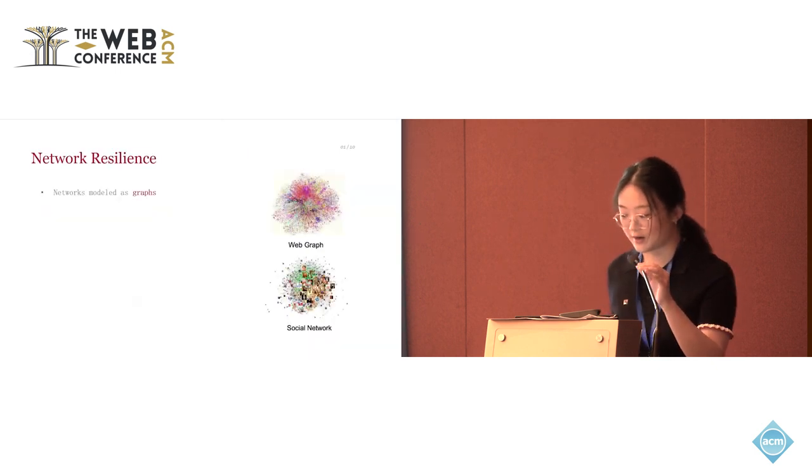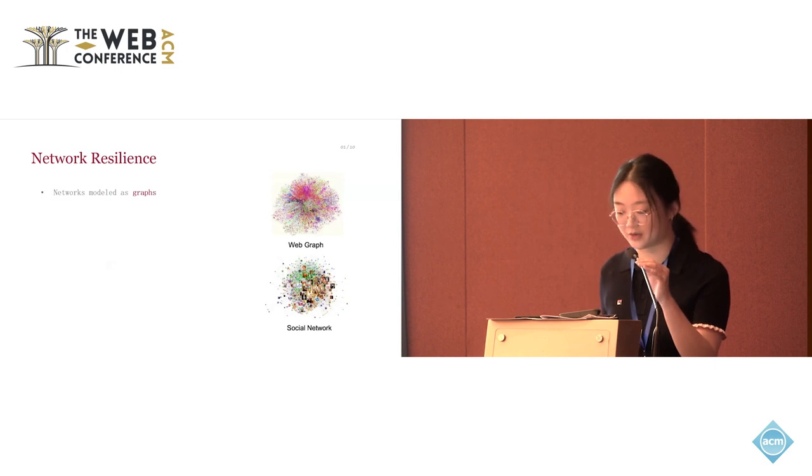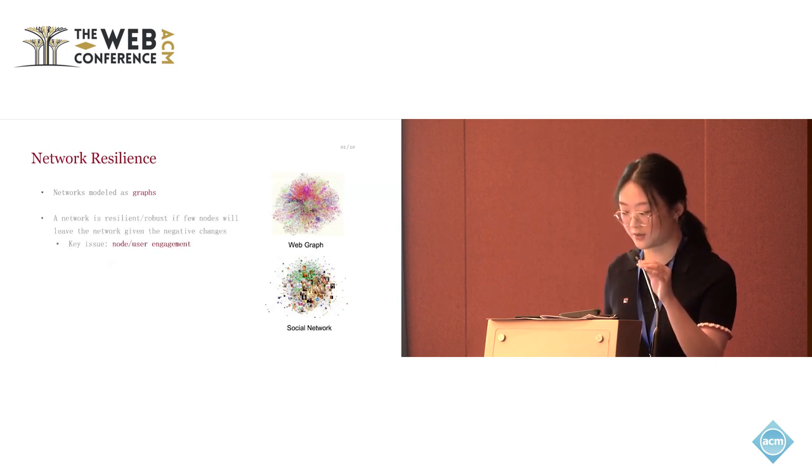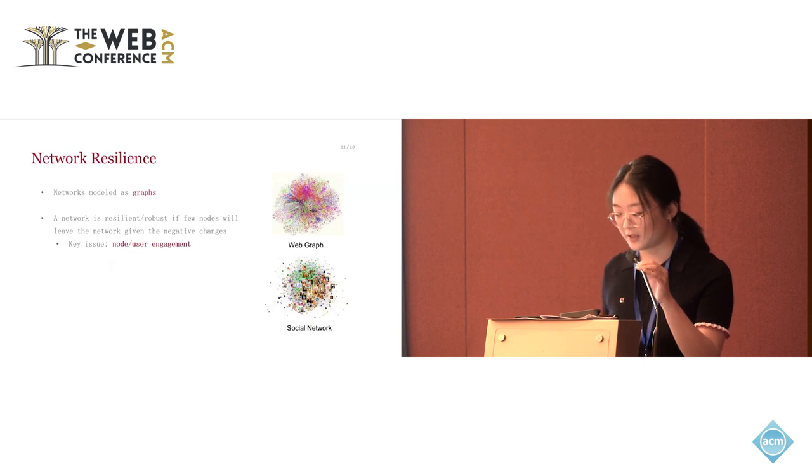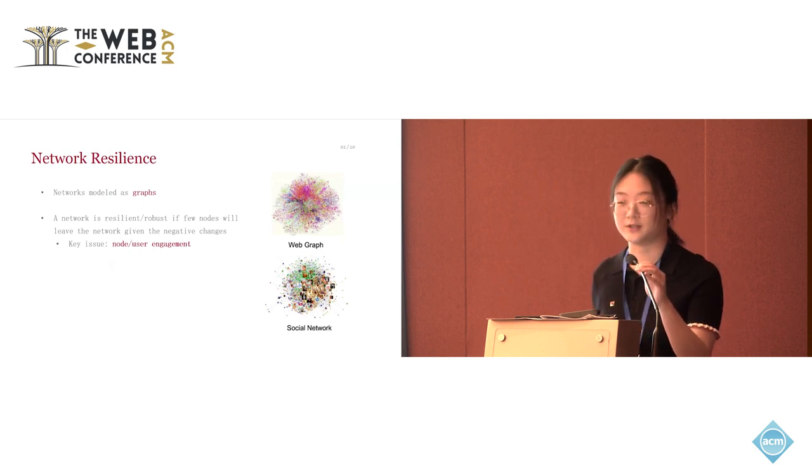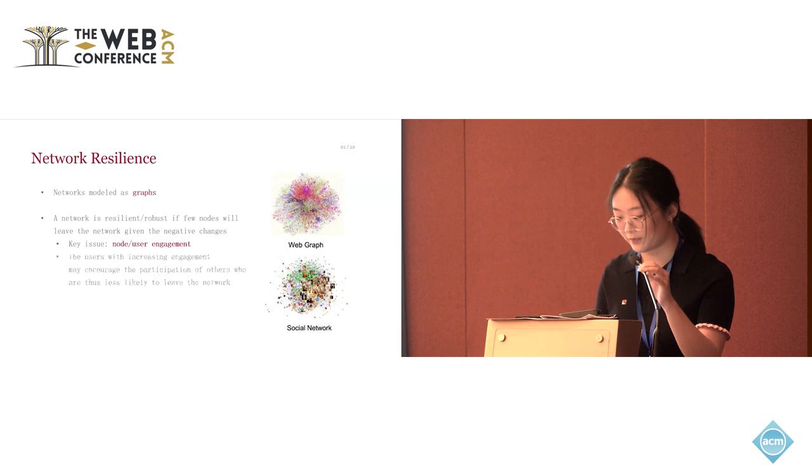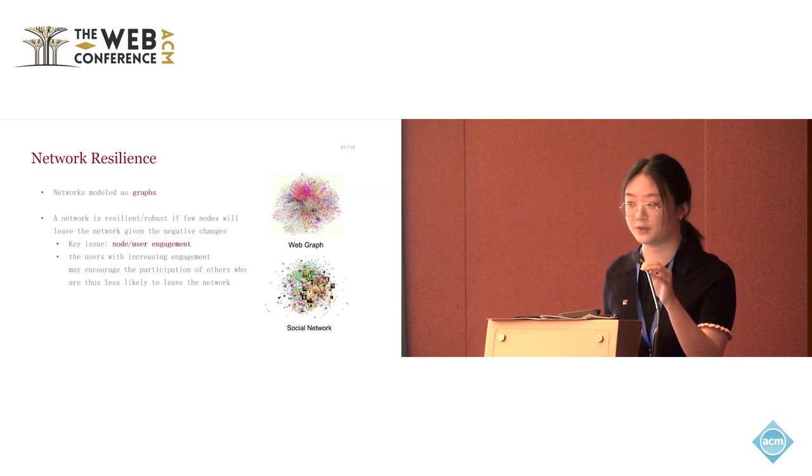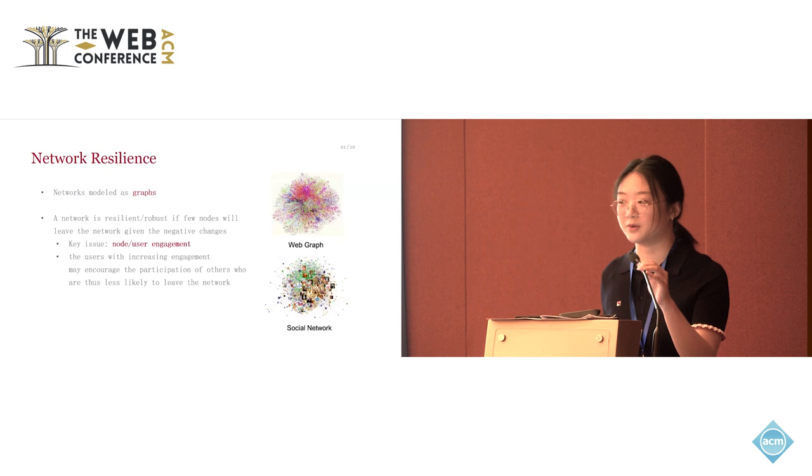Real-world networks are usually modeled as graphs like showing in these figures. Network resilience refers to a network's ability to adapt and endure changes, where node engagement or user engagement is the key issue. A network is called resilient or robust if few nodes will leave the network given negative changes, for example, an artificial or natural attack, like the Friendster social network.